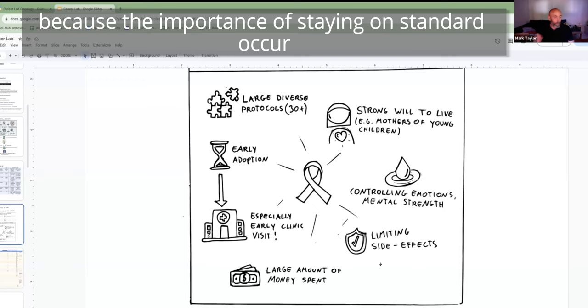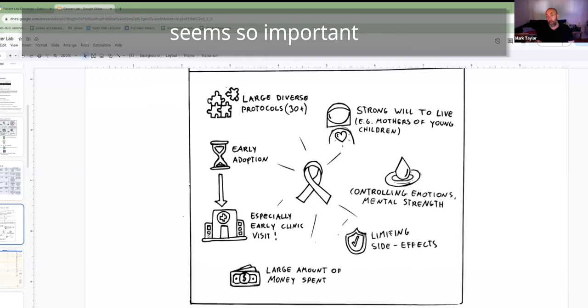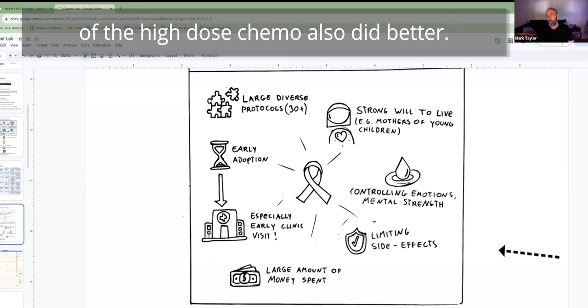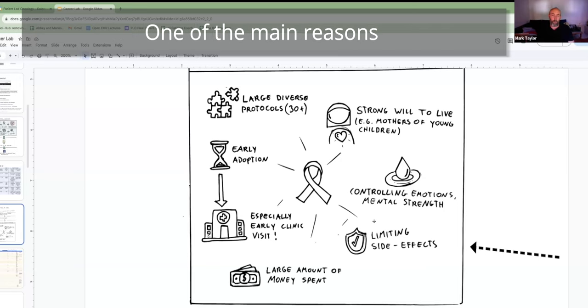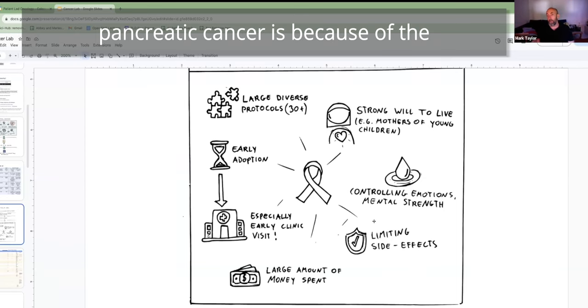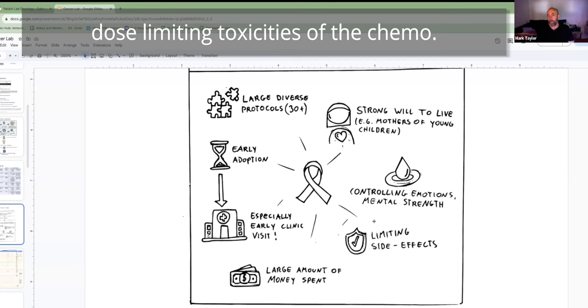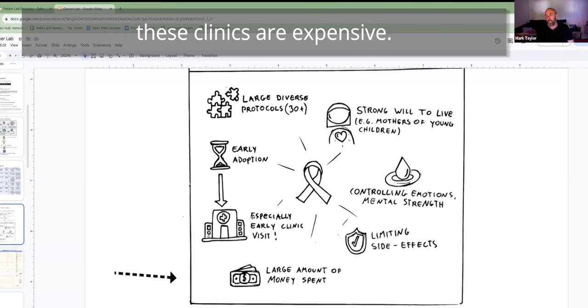Because the importance of staying on standard of care seems so important, those that limited the side effects of the high-dose chemo also did better. One of the main reasons people have to stop treatment in pancreatic cancer is because of the dose-limiting toxicities of the chemo. So those that managed that were doing better. Unfortunately, because of the number that went to these clinics, a lot of them did spend a lot of money. These clinics are expensive.